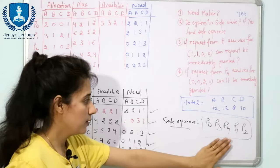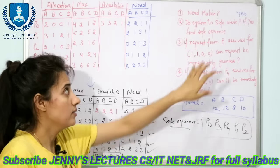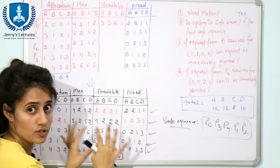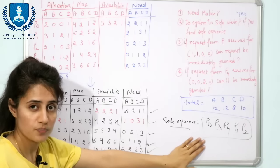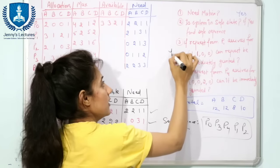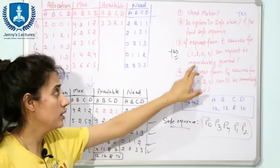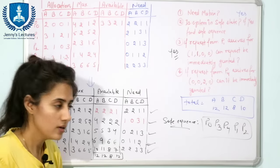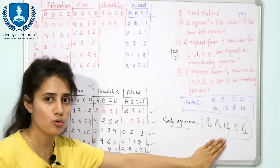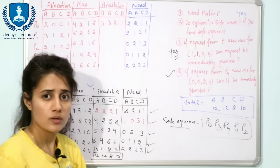The system is able to find a safe sequence, so the system will grant P1's request. The answer is yes, this request can be immediately granted, because after granting this request the system is still able to find a safe sequence and will not go into an unsafe state.